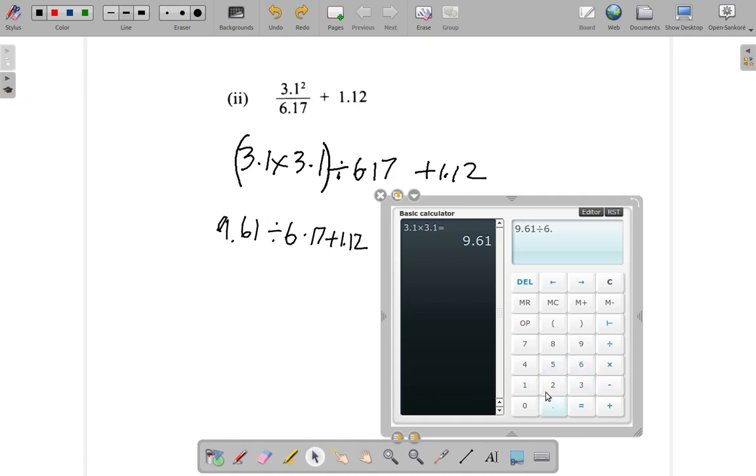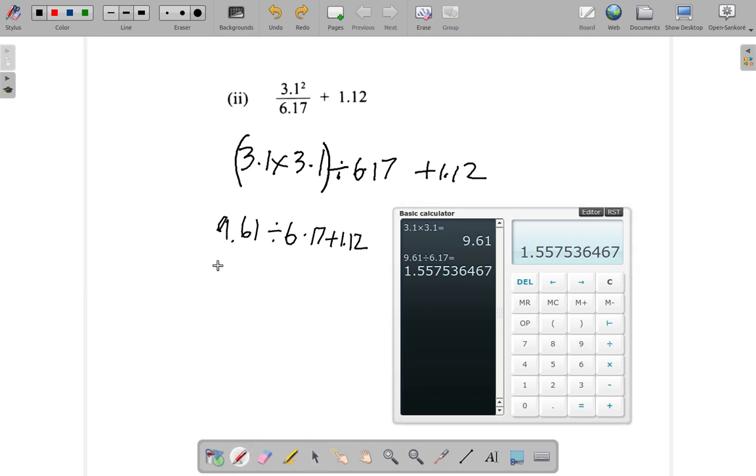It gives me 1.55... I'm going to write this to more than two decimal places because the answer must end up with two decimal places. So what I have here is 1.5575 plus 1.12.